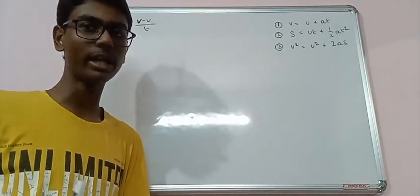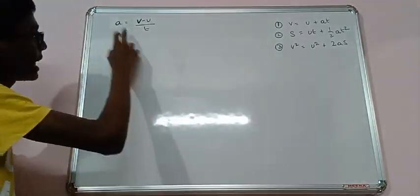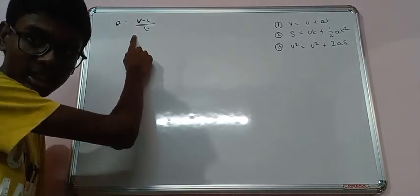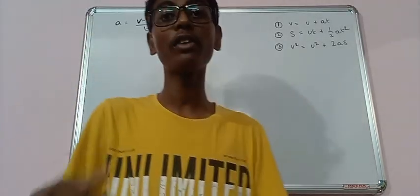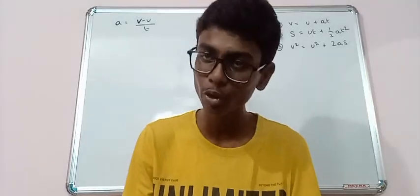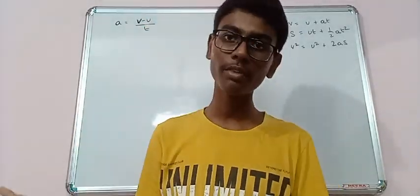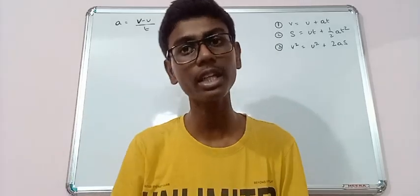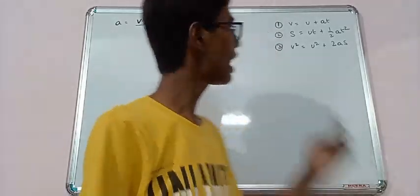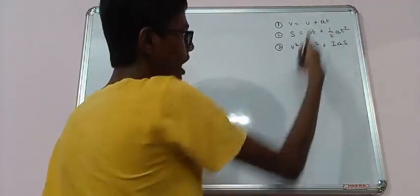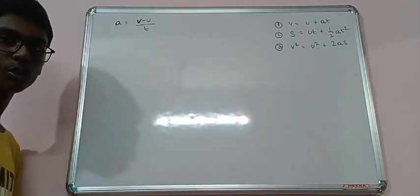But for the time being just know this formula, that is A equals to V minus U by T. Let me tell you again A is acceleration. V is the final velocity. That means finally what velocity the body in motion has assumed or acquired. U is your initial velocity. That is with which velocity the body has started its journey. And T is your time. So with this we will be deriving our first formula, that is V equals to U plus AT.